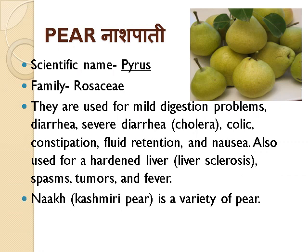Pear, Naashpati, scientific name Pyrus, family Rosaceae. They are used for mild digestion problems, diarrhea, cholera, colic, constipation, fluid retention and nausea. Also used for a hardened liver, liver sclerosis, spasms, tumours and fever. Nakh, Kashmiri Pear, is a variety of pear.